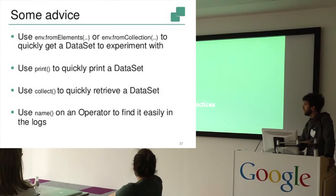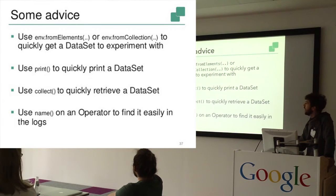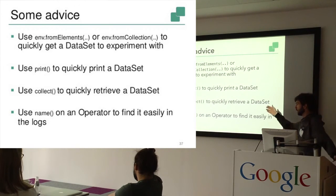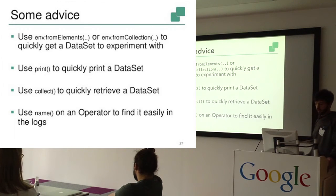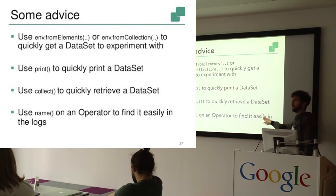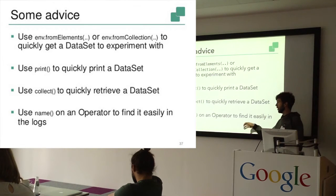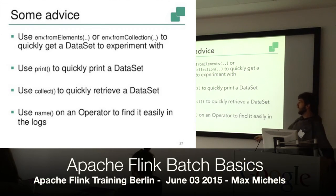Yes, and to conclude, we have some advice for you. What is really handy if you use the from elements or from collections function to quickly get some data in your program. So before you, for example, read from a big file, you would just create a sample data set before, and then use for example the print method to quickly print it, or like the count, collect, I mentioned in the previous slide. And also what you can do is if you transform an operation like map or reduce, you can actually call reduce on a data set and then name, and give it a, give it, specify a string here and give it a name, so you can quickly identify the output in the logs if there's some error during execution.